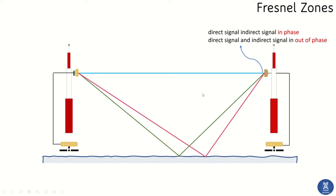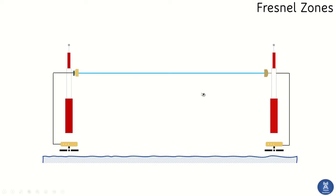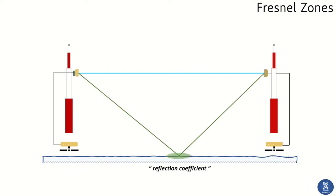Before moving on, we will discuss the reflection coefficient. The reflection coefficient describes how much energy is reflected from a particular surface. Its value ranges from 0 to 1 and depends upon the material or surface type.